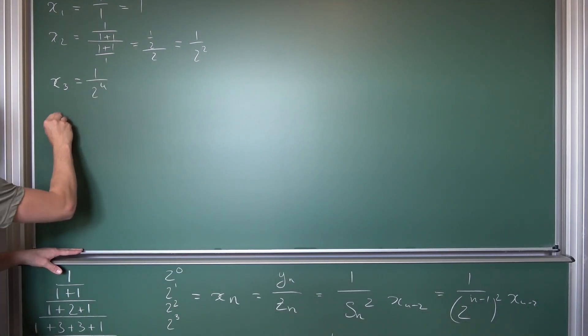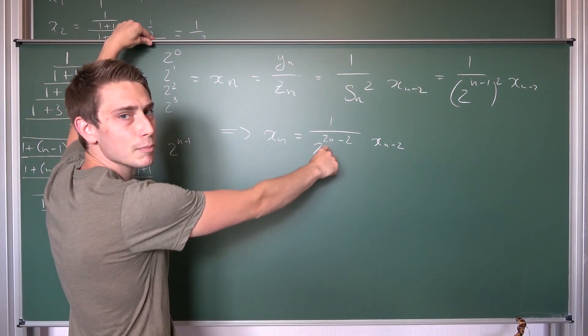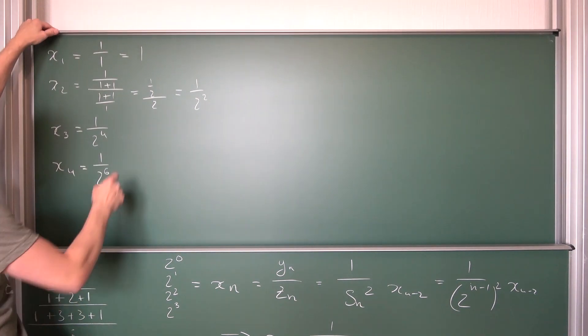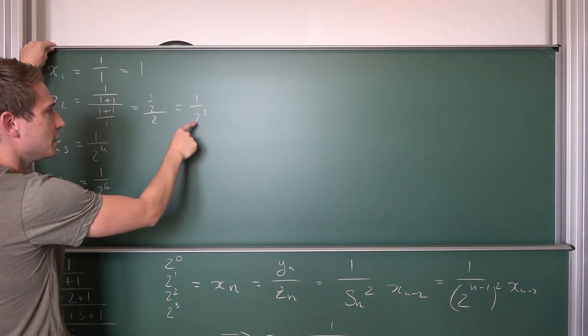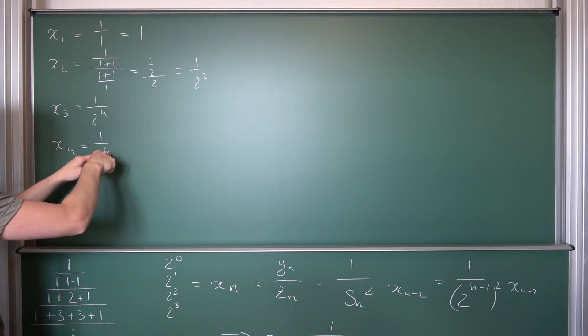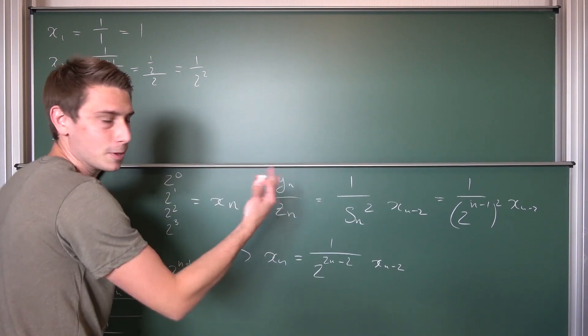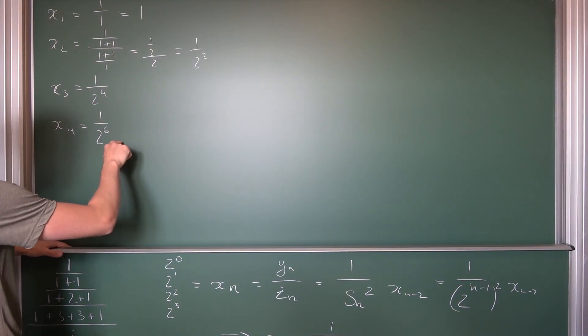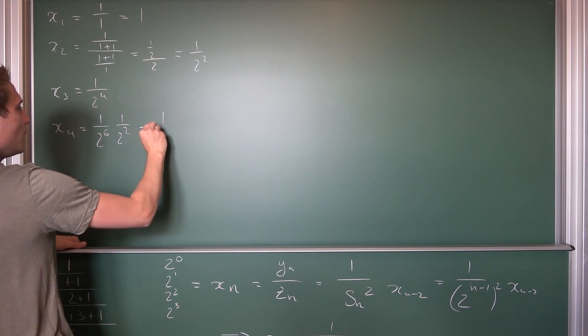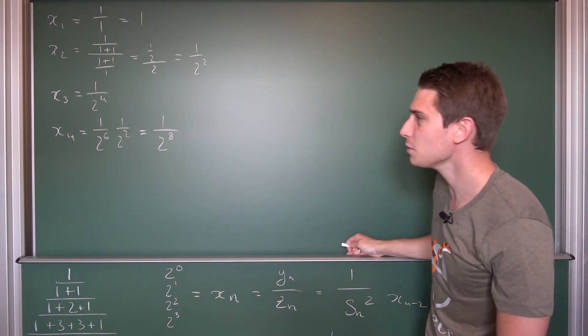Now what about x4? x4 is going to give us, now we are going to plug a 4 into here. This is 8 minus 2 is going to give us 6. 1 over 2 to the sixth power. Maybe you can already see a pattern. We are going to have 1 over 2 to the zero power. Then 1 over 2 squared. 1 over 2 to the fourth power. 1 over 2 to the sixth power. Meaning we are always going to raise the exponent of the first factor here by 2, basically. Yet again, it's just a consequence of the summation that we are having here. All right, so now 1 over 2 to the sixth power times x2, and x2 is 1 over 2 squared. Meaning 1 over 2 squared is going to give us 1 over 2 to the eighth power.